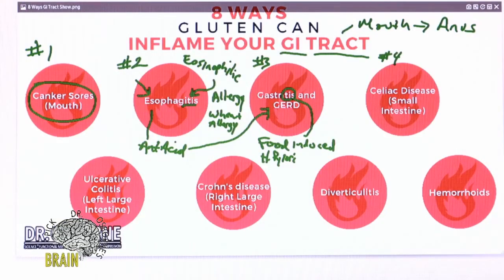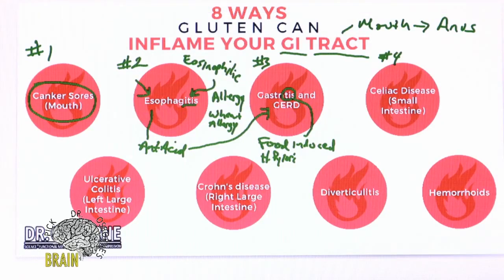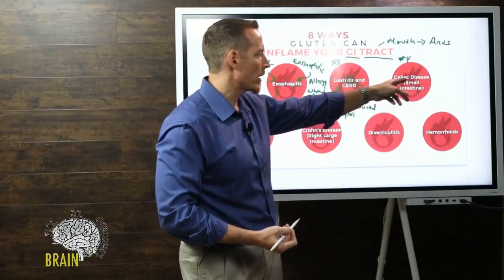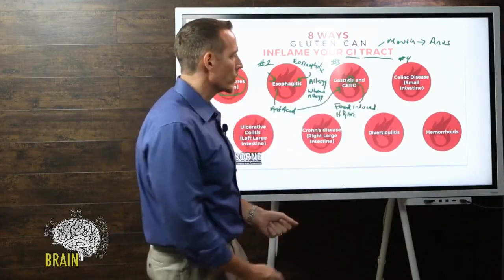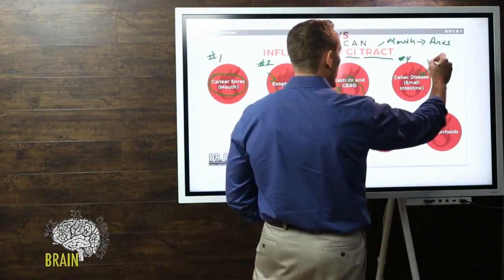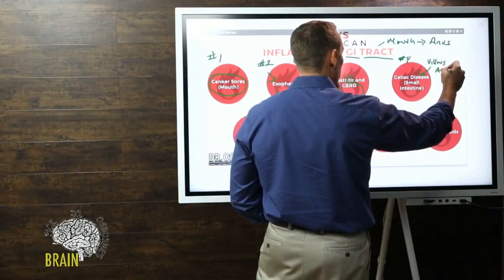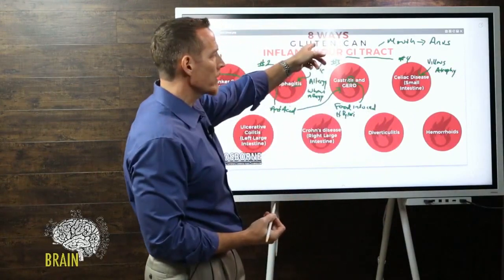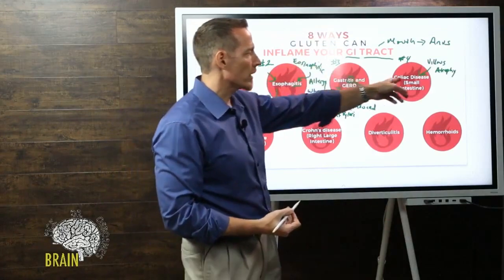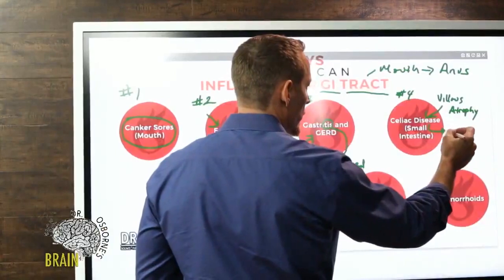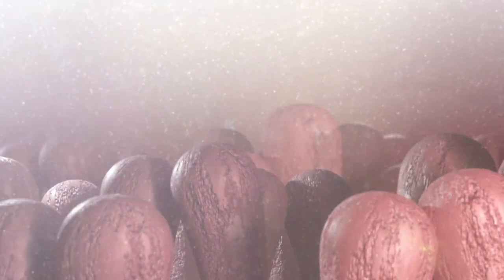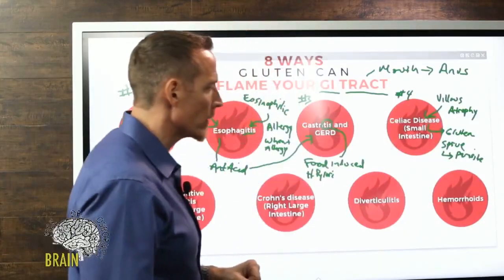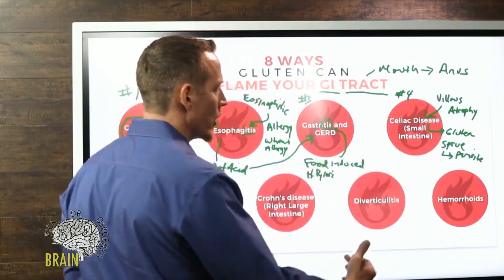Number four is celiac disease — inflammation of the small intestine, the duodenum, jejunum, and ileum, a 22-foot section of the GI tract. Celiac disease is identified when a doctor sees villus atrophy on a scope or biopsy. Villus atrophy is not unique to gluten — other things can cause it, including tropical sprue caused by a parasite, which is a microbial imbalance.